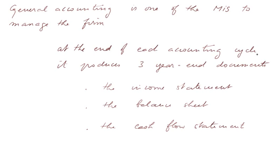At the end of each accounting cycle, it produces, we saw, three year-end documents: the income statement, the balance sheet, and we learned recently, the cash flow statement.